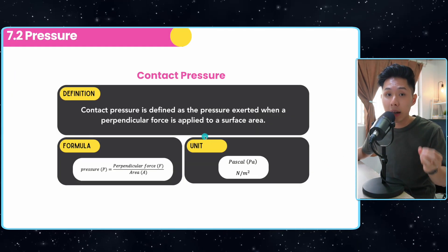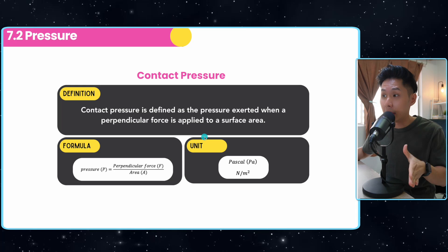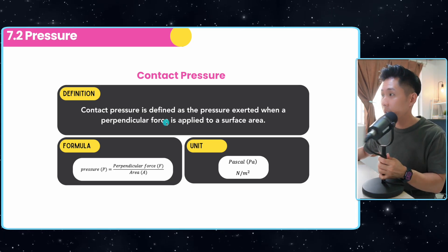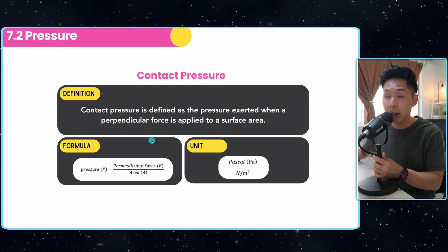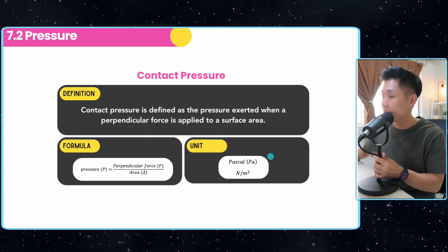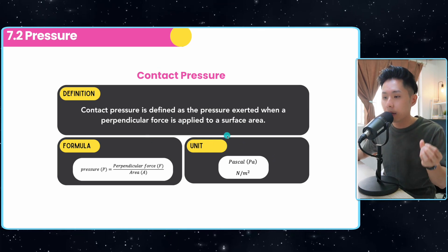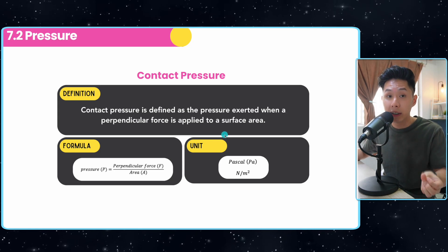Let's move on to pressure. Note that density plays a role in determining the value of pressure. Now the contact pressure, the formula is force divided by area. We learned in IGCSE physics already. The unit is pascal. It basically measures how force is concentrated over a single area.